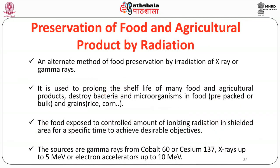Preservation of food and agriculture products by radiation: radiation or X-rays and gamma rays are used to prolong the shelf-life of many food and agriculture products such as potatoes, onions and spices. It destroys bacteria and microorganisms in food — pre-packed, bulk or grains. Food is exposed to a controlled amount of ionizing radiation in a shielded area for a specific time. Sources include gamma rays from cobalt-60 or caesium-137, X-rays up to 5 MeV, or electron accelerators up to 10 MeV. Doses range from 0.05 kilogray to 0.15 kilogray for onions and potatoes.